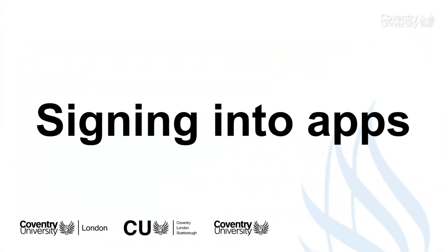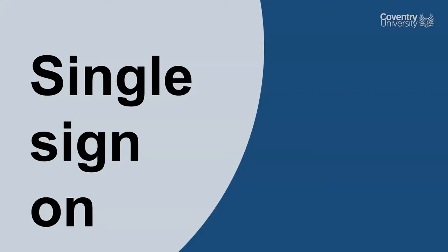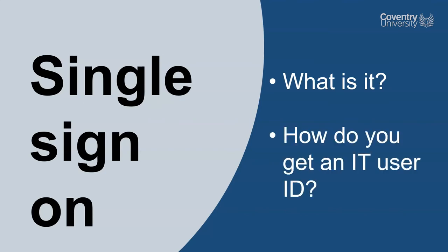First thing: signing into apps. Coventry University has single sign-on, and this allows a user to log in with a single user ID and password to most of our software systems. How to get a user ID? Well, you'll actually create it yourself once you've enrolled. There are instructions on how to do this in the new students module in Aula, and you'll get access to that during enrolment.